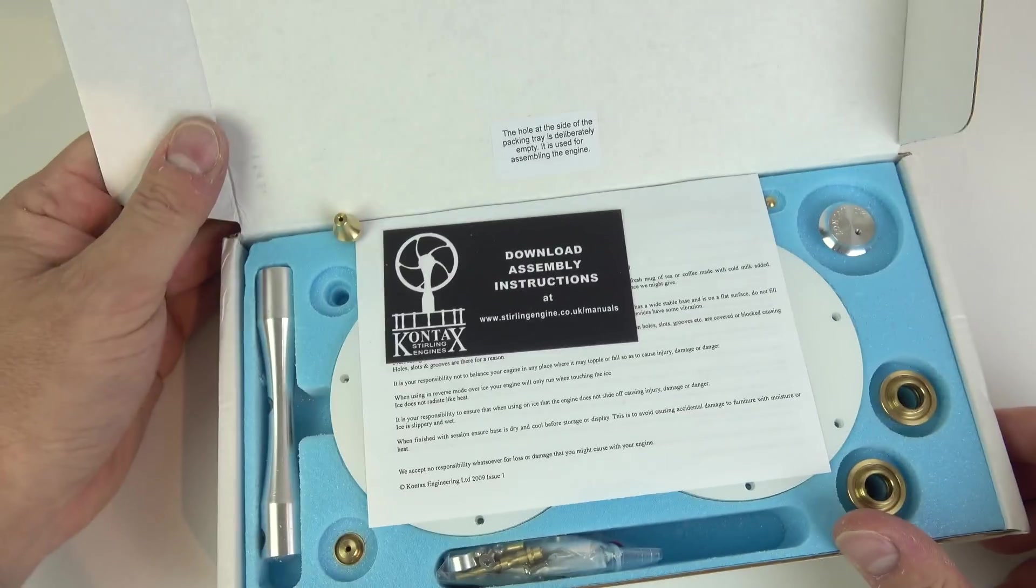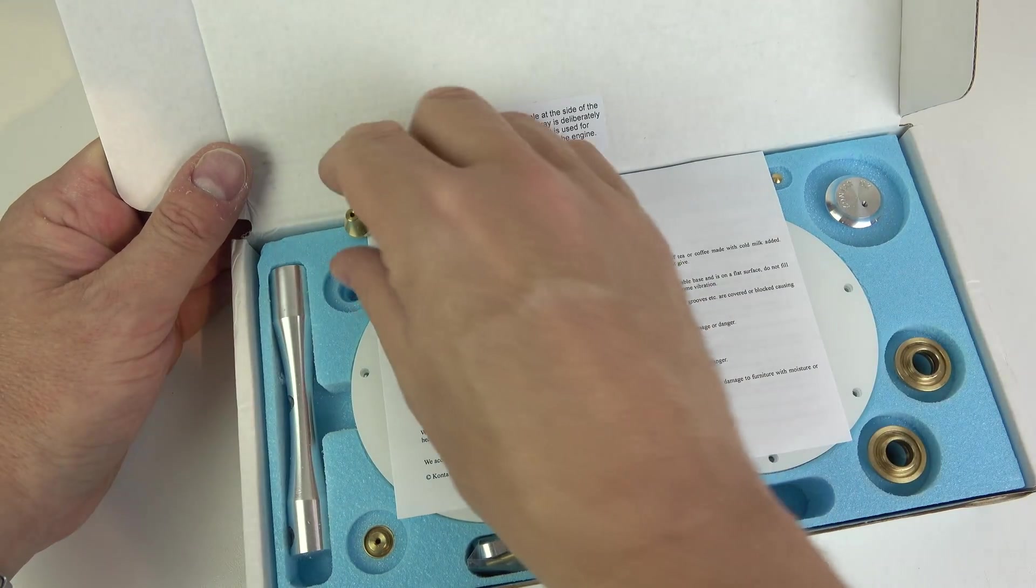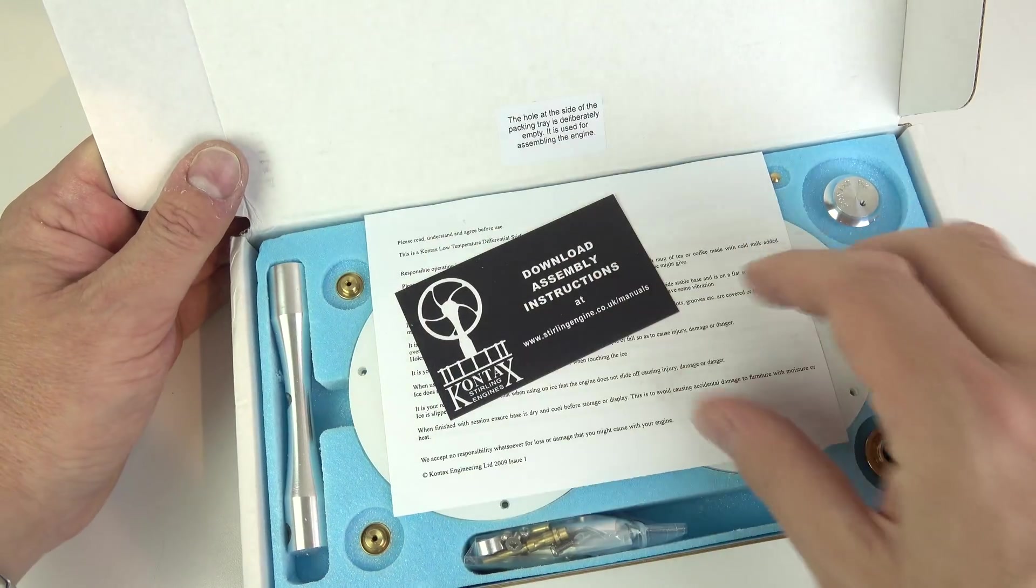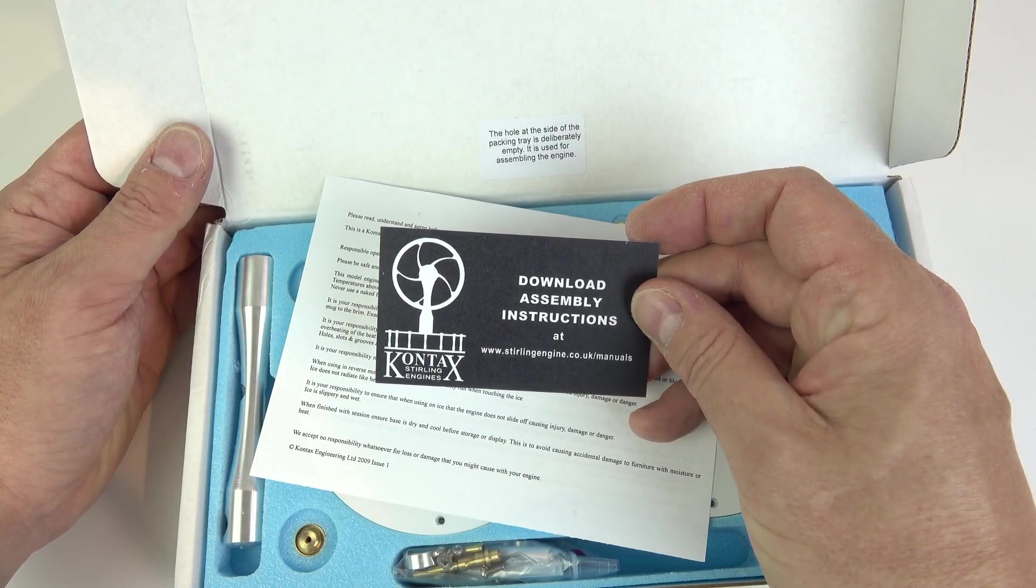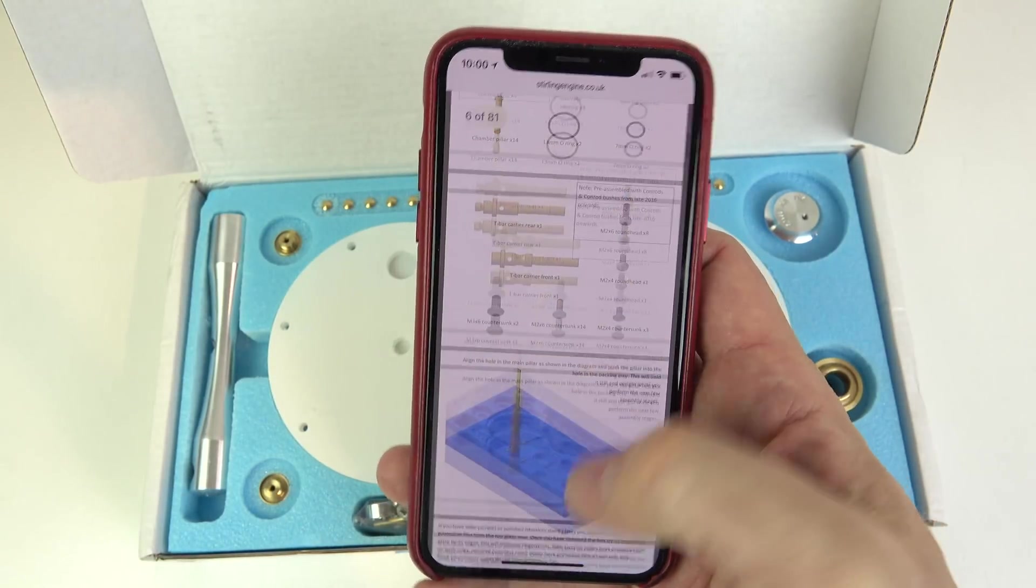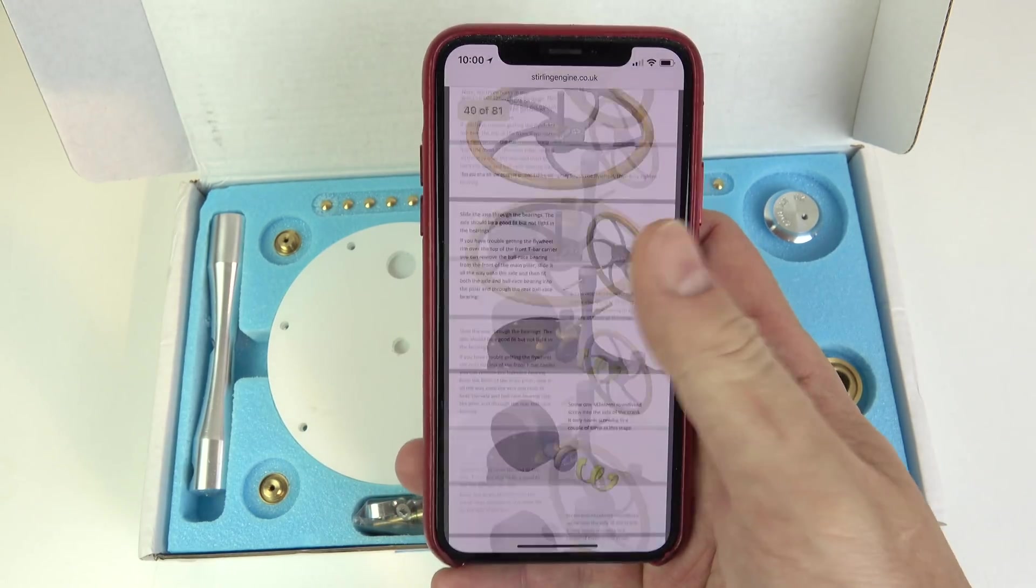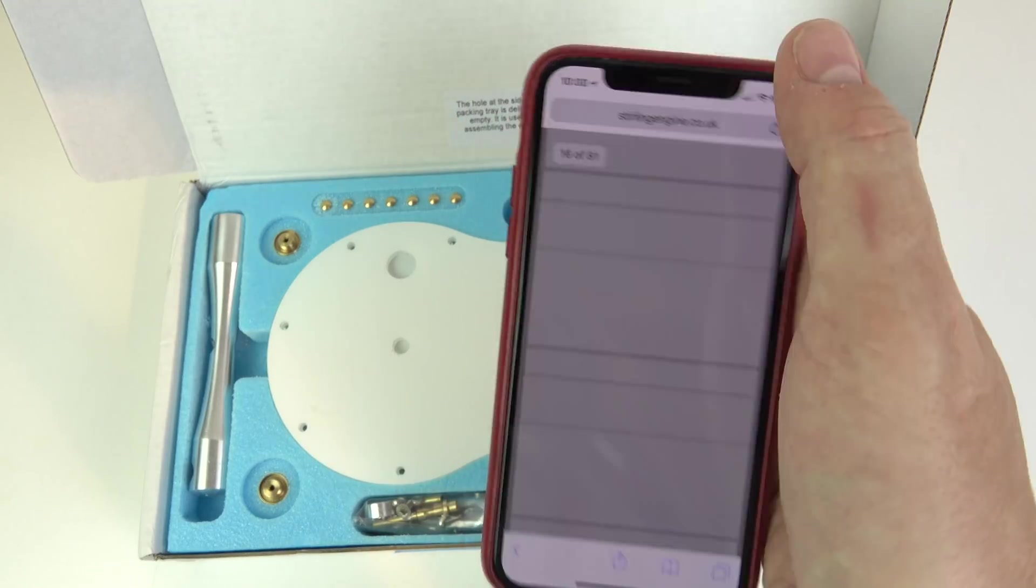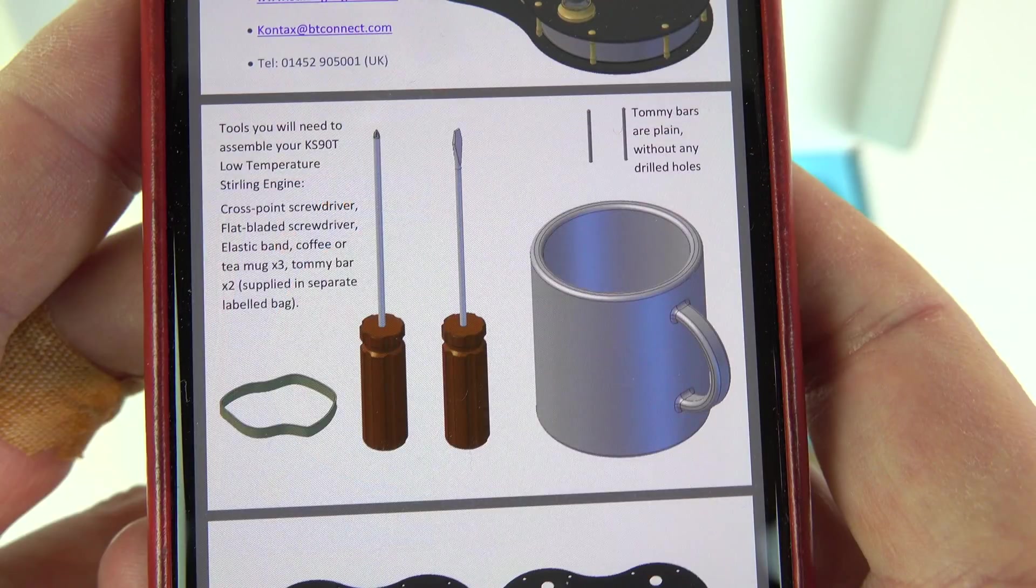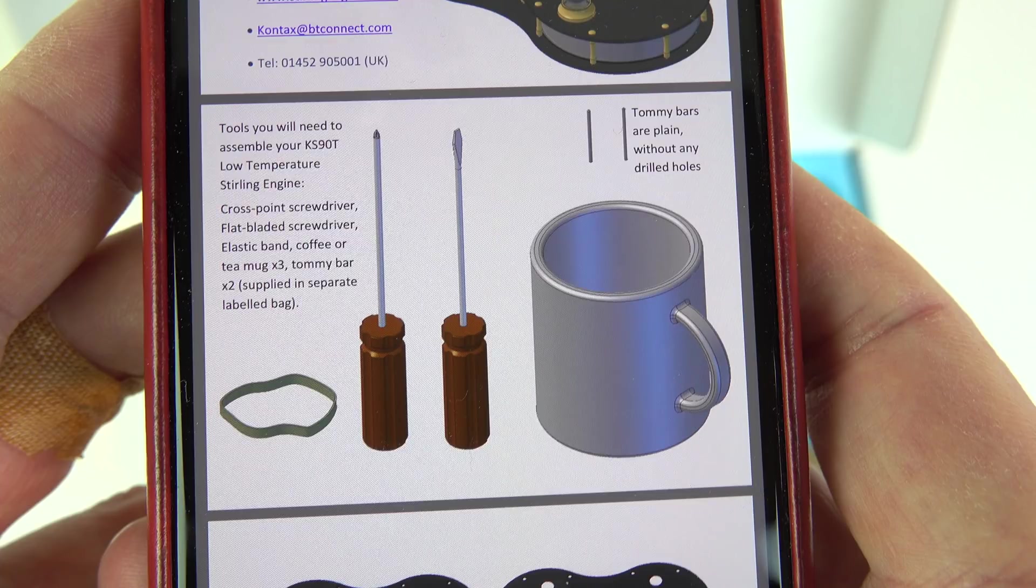Now the first thing you see when you open the box is a card telling you that you need to download the assembly instructions. So you'll need to have access to the internet, you'll need to have something you can read them on as you're assembling the kit. They do come in the form of a PDF, but you don't really want to print it out because it's 80 odd pages long. It has a lot of nice graphics and detailed information on there, so it's the kind of thing that really you're better off reading off a phone or a tablet as you assemble the kit.